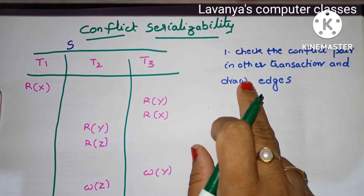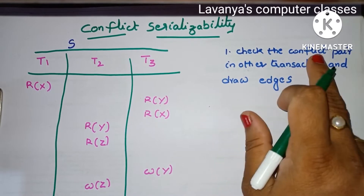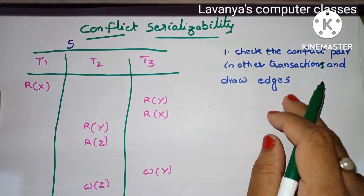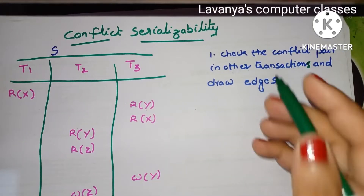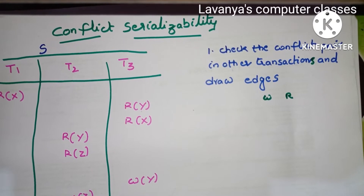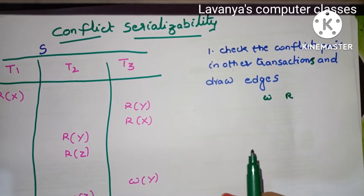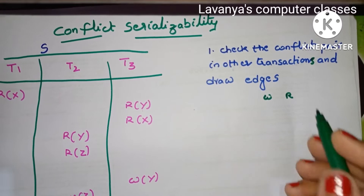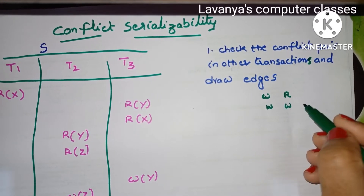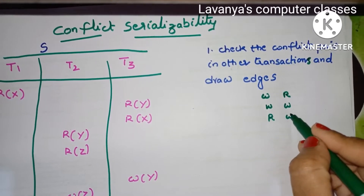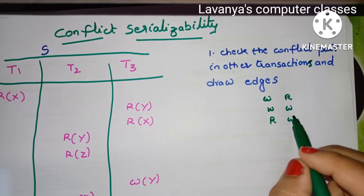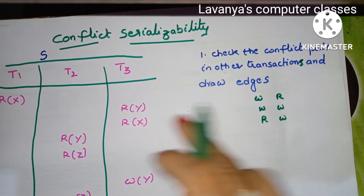For checking conflict serializability, we check the conflict pairs in other transactions and draw the edges. What are the conflict pairs? We have two operations: W and R — write and read. The conflict pairs are: W-R, W-W, and R-W. For these pairs we get a conflict. For R-R, we do not get any conflict.